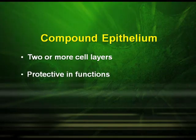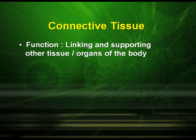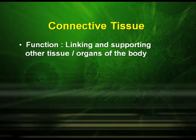Compound epithelium tissue is made up of two or more cell layers and is protective in function. The next type of tissue is the connective tissue, whose function is linking and supporting the other tissues and organs of the body. There are three types: loose connective tissues, dense connective tissues, and specialized connective tissues.